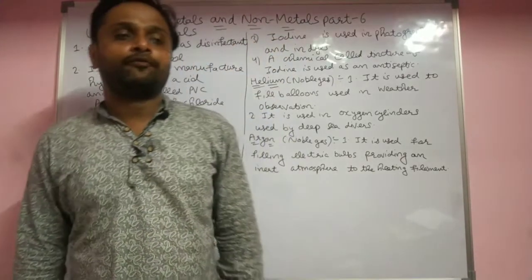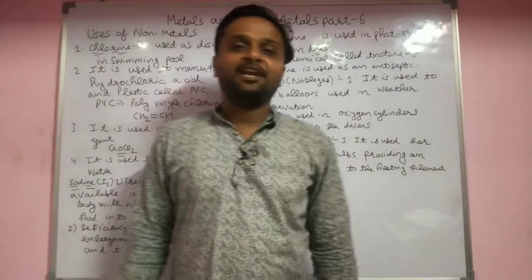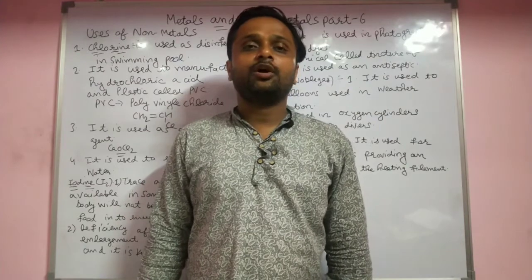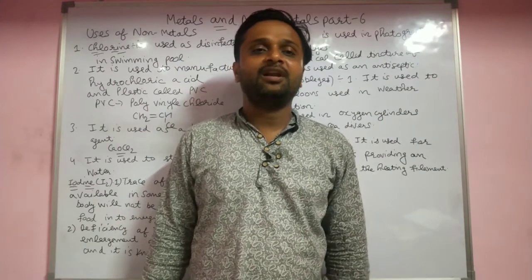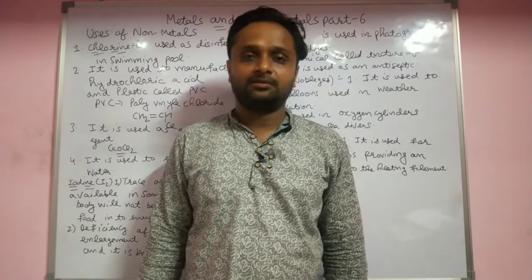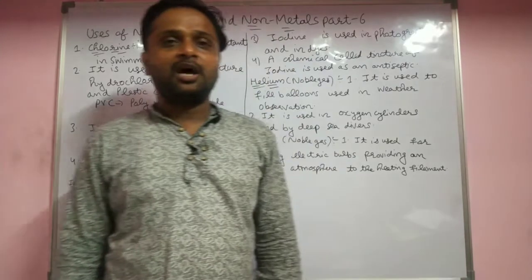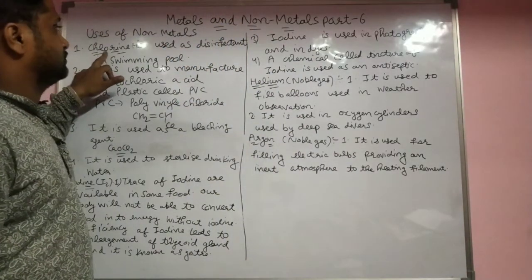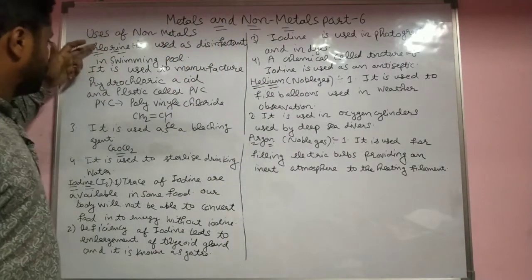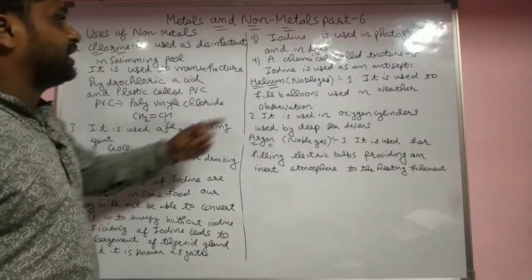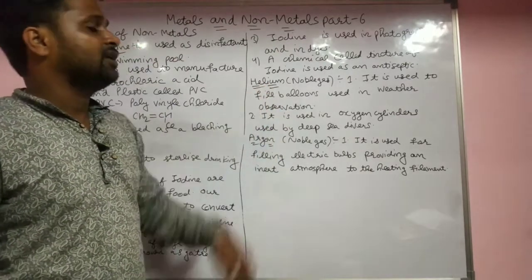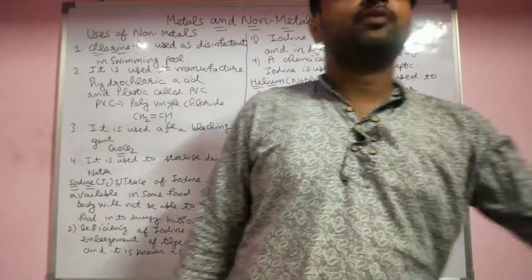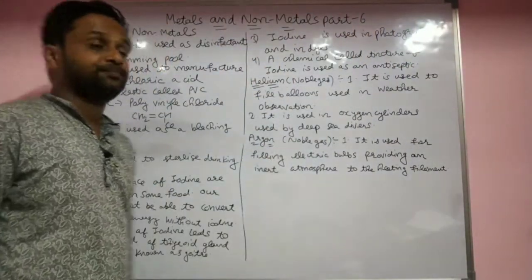Good morning all of you. In the last lecture we discussed the uses of oxygen, nitrogen and carbon — these are the non-metals. Now we will see the uses of chlorine, iodine, helium, and argon. Chlorine and iodine are also non-metals, while helium and argon are noble gases.